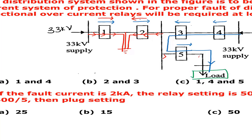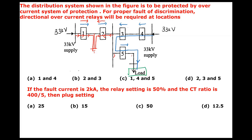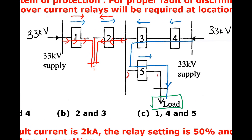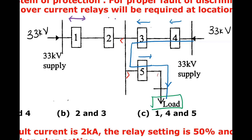This will help decide which should be non-directional and which should be directional. When both the normal current and fault current directions are the same, use a non-directional relay. When the normal current direction and fault current direction are opposite, use a directional relay set in the fault current direction. Relay 1 is non-directional and relay 2 is directional.